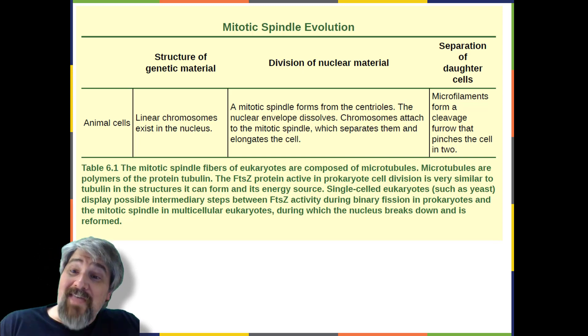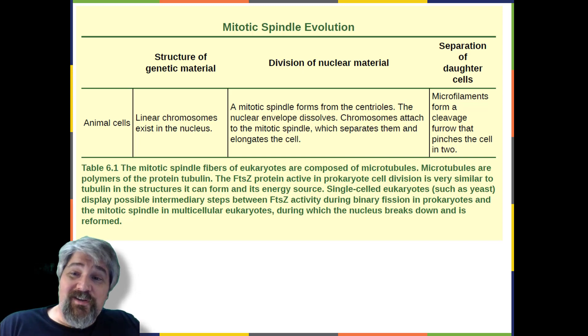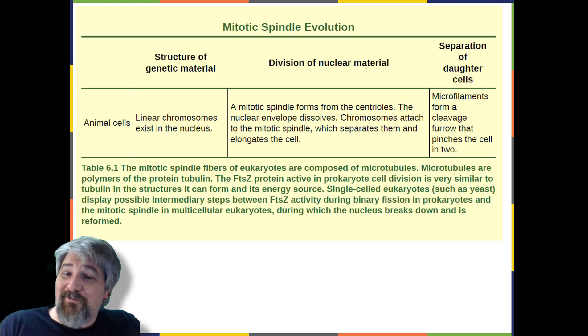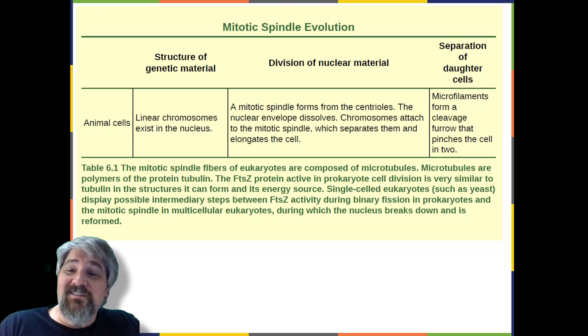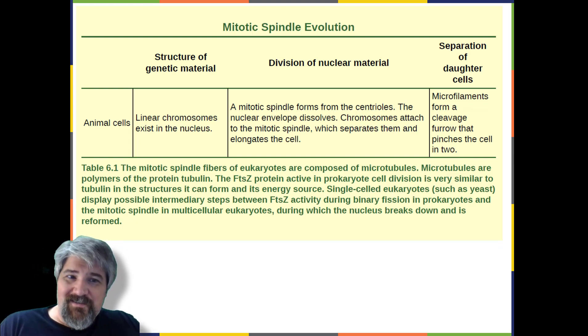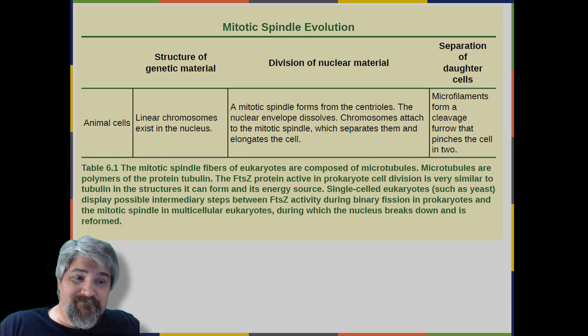That brings us to the end of Chapter 6, Reproduction at the Cellular Level. Next up will be Chapter 7, The Cellular Basis of Inheritance. Until then.